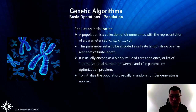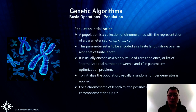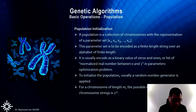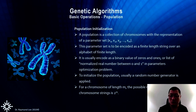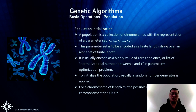For a chromosome of length m, the possible number of different chromosome strings is 2^m — if every element is 0 or 1, you have 2^m possible combinations, which gives you a very large population to work with.